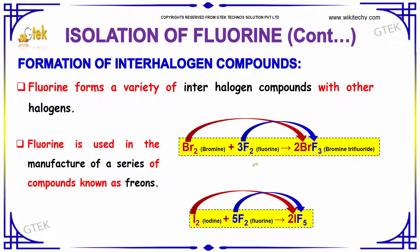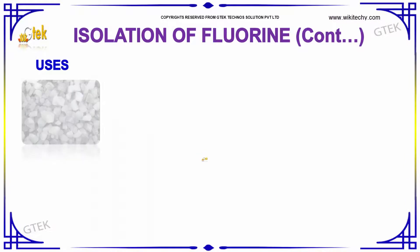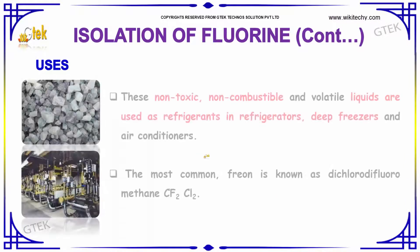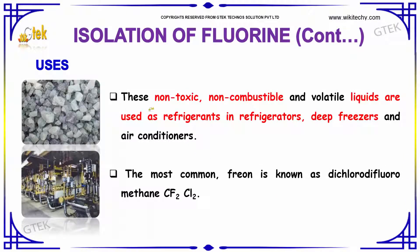Uses: Fluorine is used in the manufacture of a series of compounds known as Freons. These non-toxic, non-combustible and volatile liquids are used as refrigerants in refrigerators, deep freezers, and air conditioners. The most common Freon is Dichlorodifluoromethane.